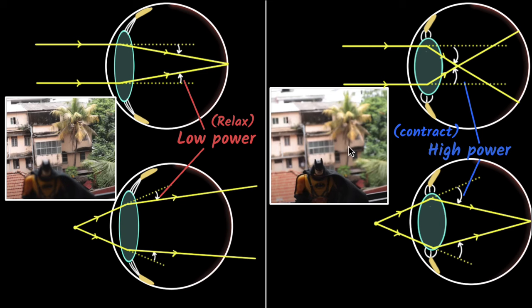What's important is that you don't have to memorize this — logically, if you think about it, you'll understand it. When you're looking at things far away, you need low power and eyes are relaxed. When you're looking at things that are close by, you need to increase the power of your lens, and therefore your ciliary muscles are contracted and your eyes are actually a little stressed. But the closer the object comes, the more power you need — and there is a limit to how high your power can go.